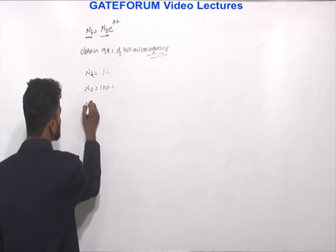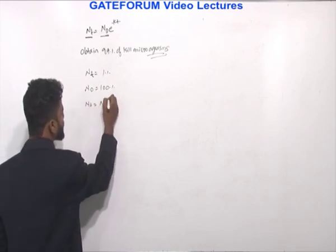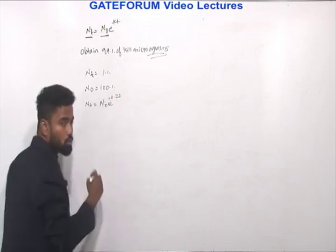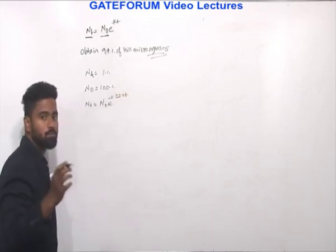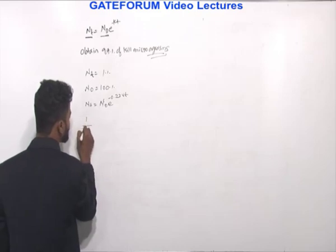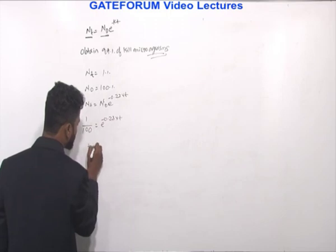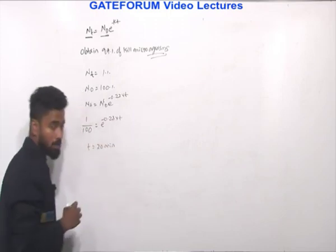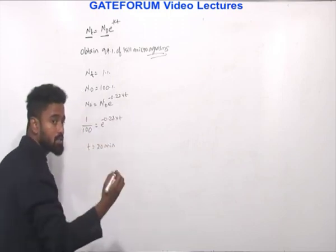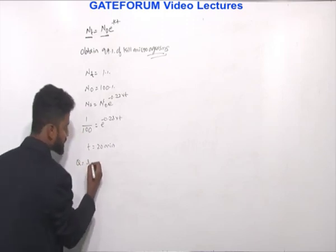So NT = N₀·e^(−kT). K is given as 0.23 meter inverse. Setting NT equal to 1% of N₀, that is 1/100, and substituting k = 0.23, solving for T gives T equal to 20 minutes.